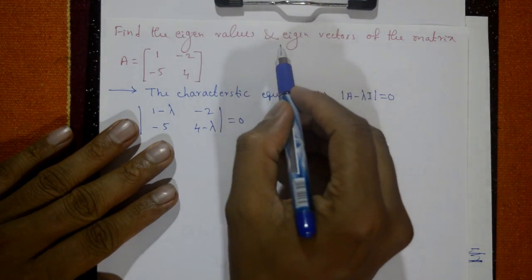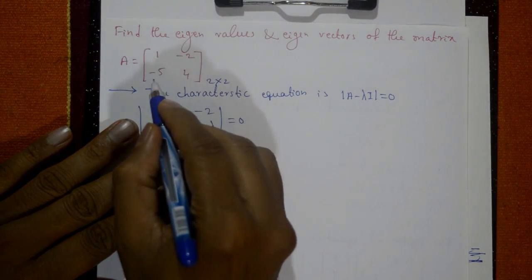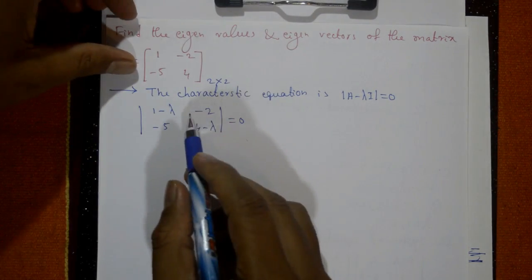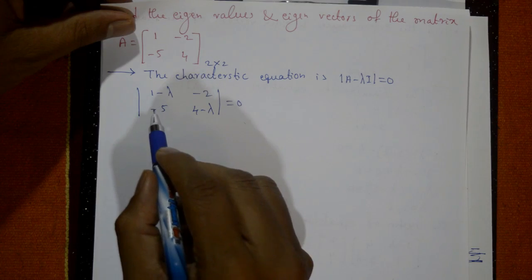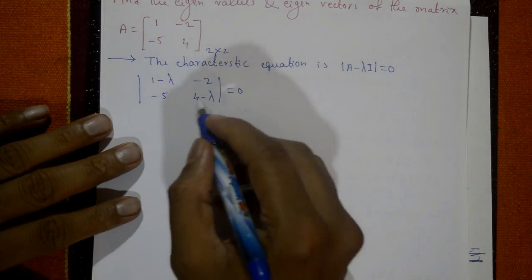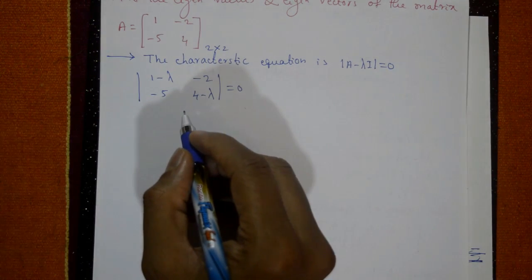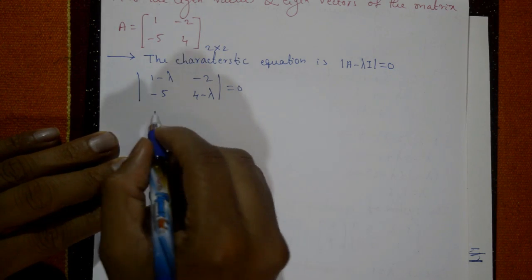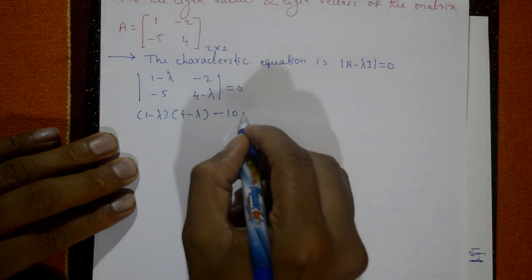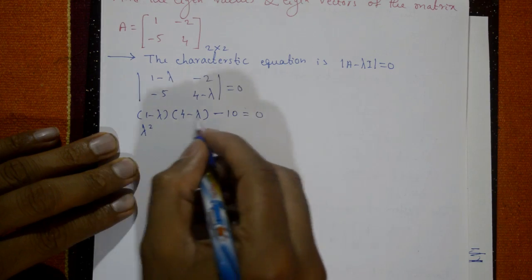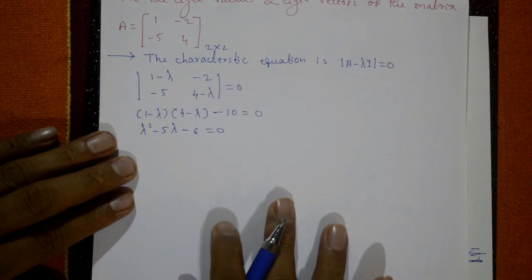Find the eigenvalues and eigenvectors of the 2×2 matrix [[1, −2], [−5, 4]]. Write the characteristic equation |A − λI| = 0: determinant of [[1−λ, −2], [−5, 4−λ]] = 0. Expanding: (1−λ)(4−λ) − 10 = 0, giving λ² − 5λ − 6 = 0.